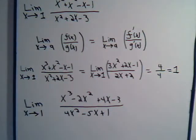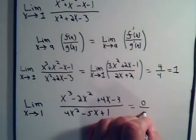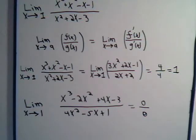So if we plug that into here, we have 1 minus 2 is negative 1, plus 4 is 3, minus 3. You get 0, not a good start. 4 minus 5 is negative 1, plus 1, 0 over 0. It doesn't do us any good at all, that's meaningless.